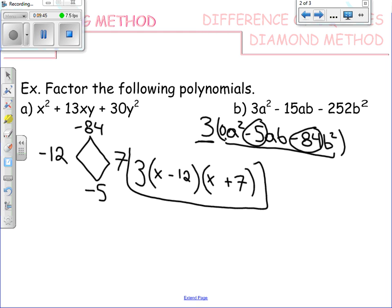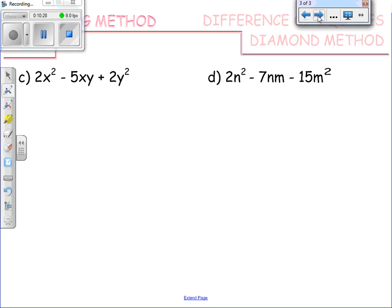So, the top of the diamond is whatever's here, this value, times this value. So, there's one times negative 84. There's just negative 84. So, what goes on the bottom of the diamond? Your B term. Go to the other side. Negative 12, 7. That's a trickier one to find.